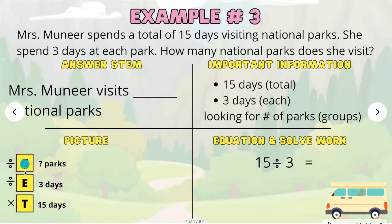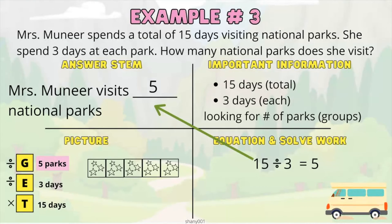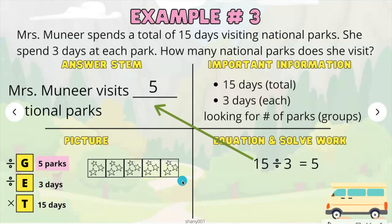If you notice on our picture model, we cannot draw the groups because we don't know how many groups. But let's go ahead and solve the equation first, which is 15 divided by 3. We will use our multiplication chart — first locate the divisor 3, slide over to 15, and look up. Our answer is 5. Mrs. Muneer visits 5 national parks. Now go ahead and fill in your picture model: draw your 5 squares, fill in 3 objects in each square, and you have a total of 15.